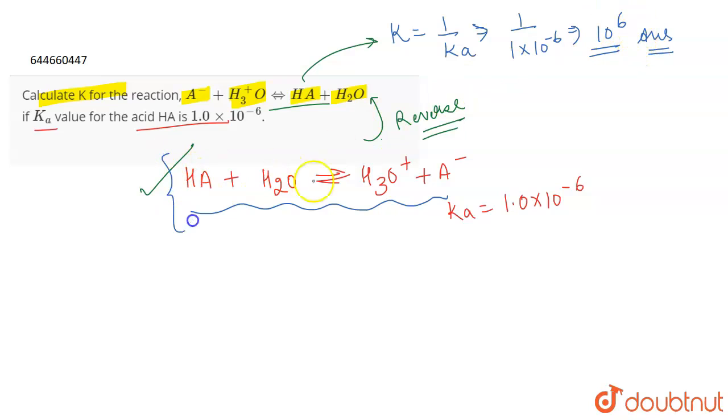So simply you just had to write down the reaction for the dissociation of an acid, and once you reverse it, you will be getting the reaction for which you are asked the value of equilibrium constant.